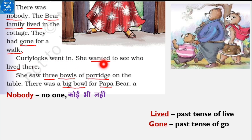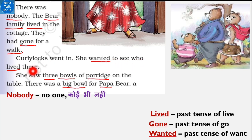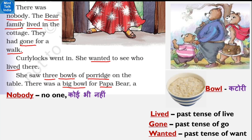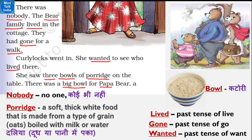Curly Locks went in - Curly Locks ghar ke andar ghusi. She wanted - 'wanted', 'want' ka past tense - woh chahati thi to see who lived there - yahaan pe kaun rehta hai yeh dekhna chahati thi. 'Lived' - 'live' ka past tense hota hai. Usne wahaan pe aur kya dekha? She saw three bowls of porridge - teen matlab three, bowls matlab katoriyaan, of porridge matlab halwe ki.